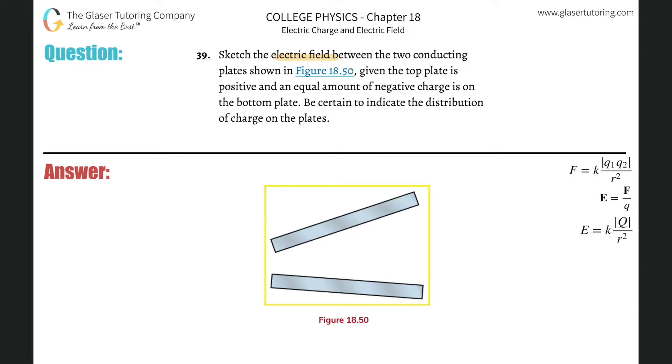Number 39: Sketch the electric field between the two conducting plates shown in Figure 18.5, given the top plate is positive and an equal amount of negative charge is on the bottom plate. Be sure to indicate the distribution of charge on the plates.